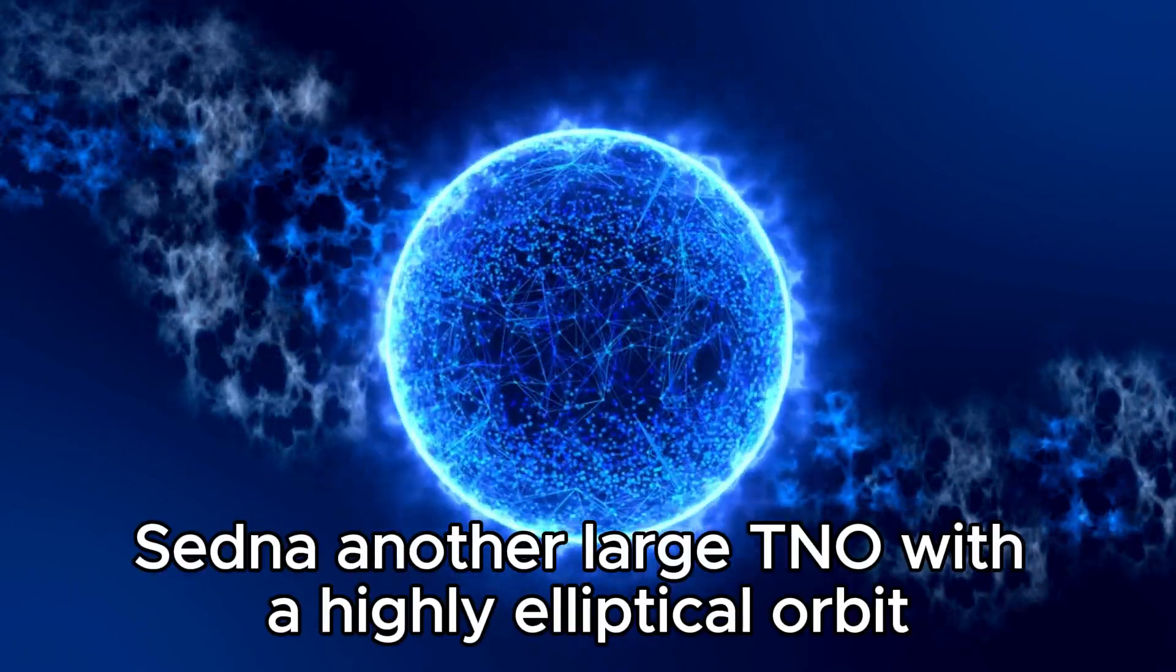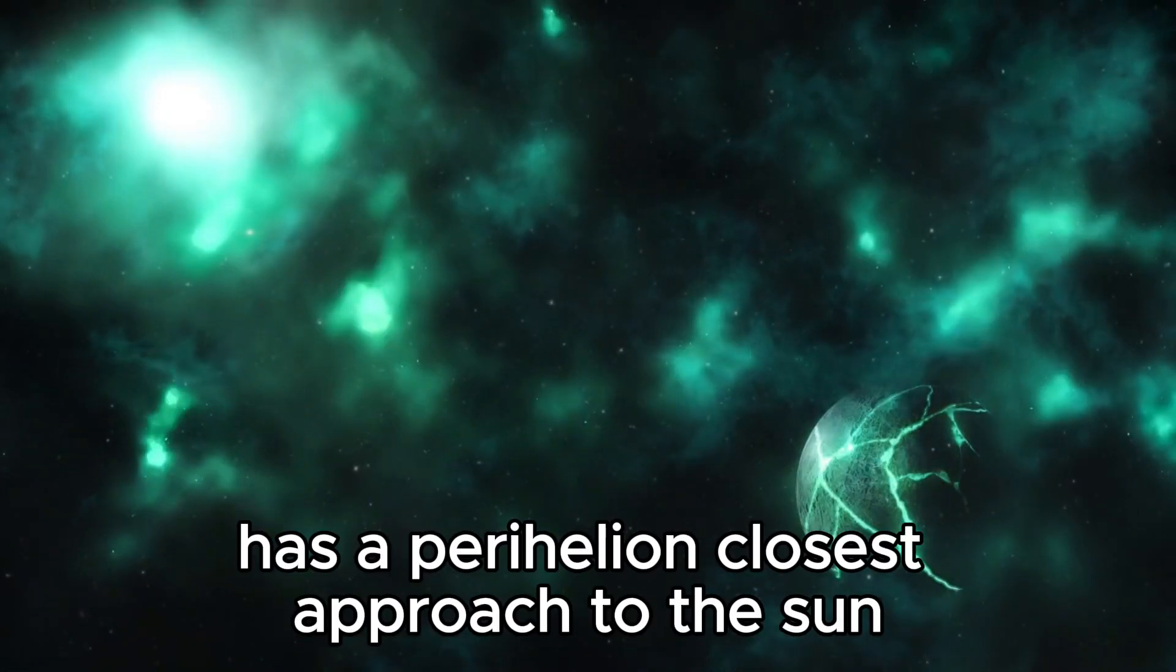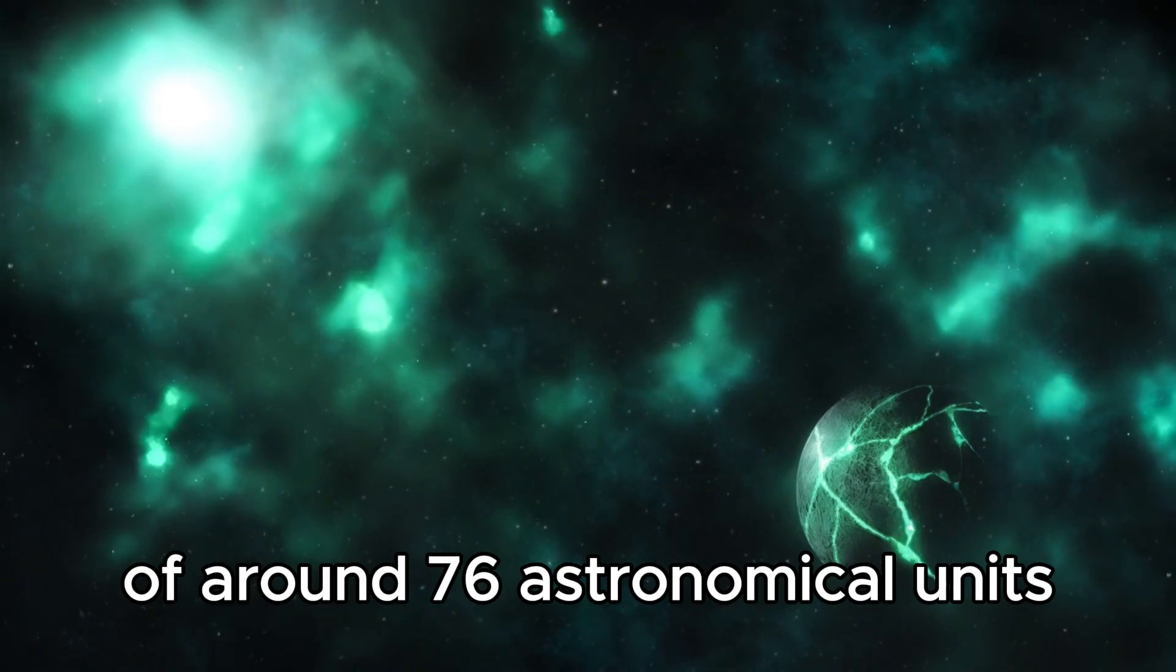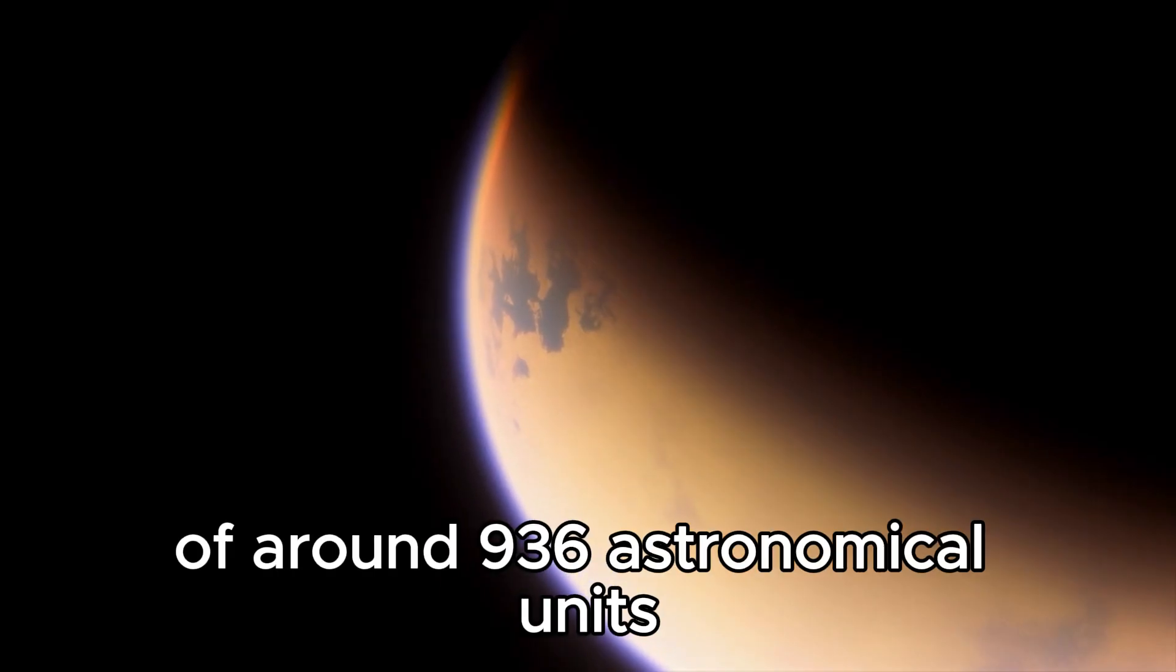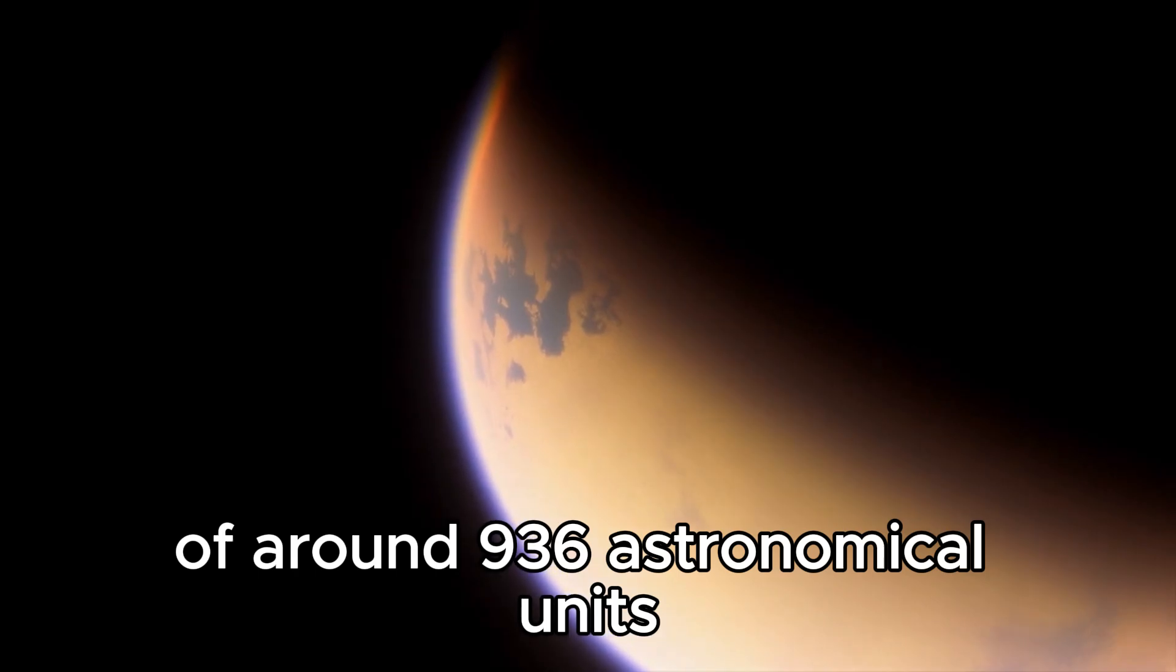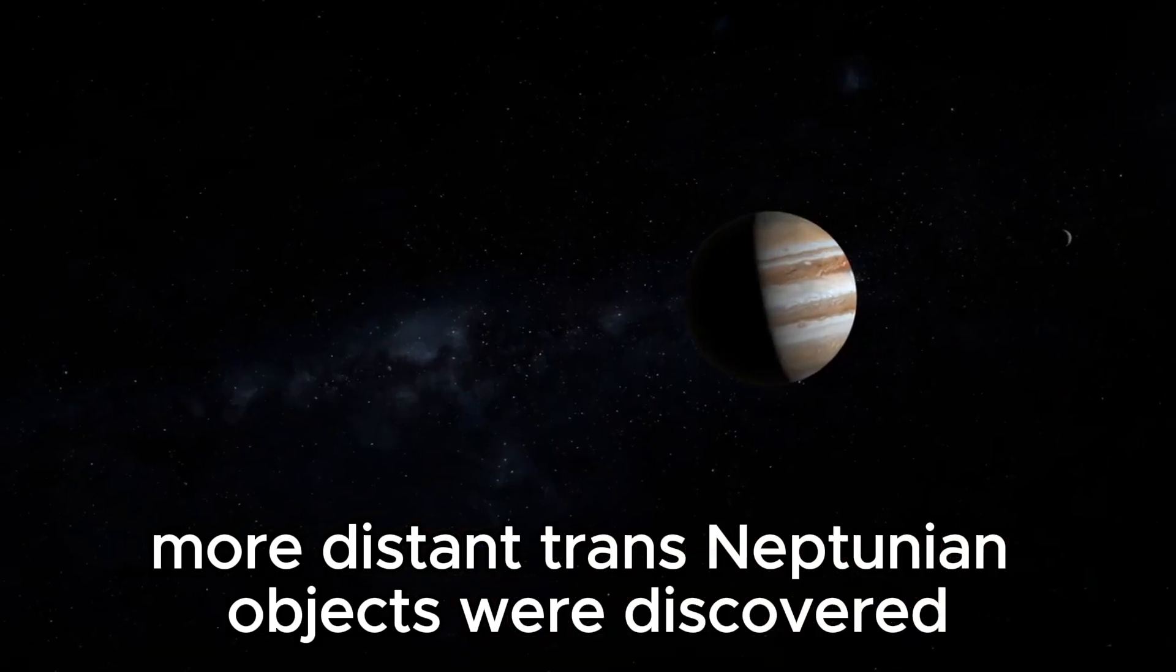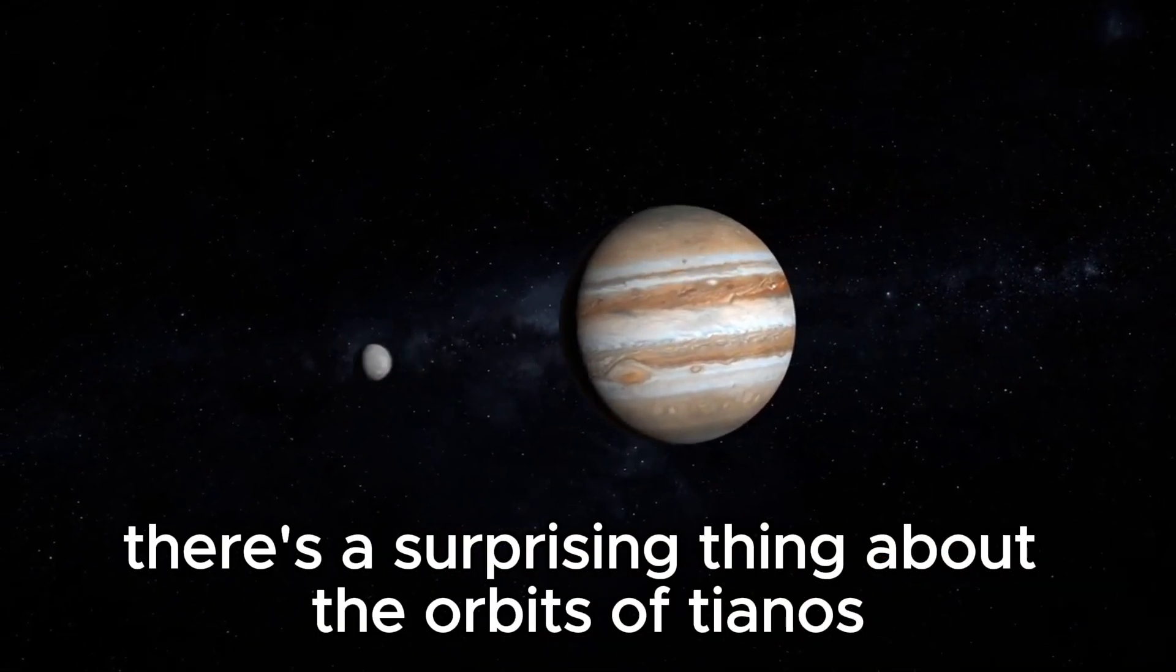Sedna, another large TNO with a highly elliptical orbit, has a perihelion closest approach to the Sun of around 76 astronomical units and an aphelion farthest point from the Sun of around 936 astronomical units. In the following couple of years, more distant trans-Neptunian objects were discovered. There's a surprising thing about the orbits of TNOs.